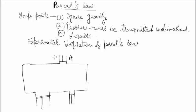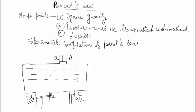अब होता क्या है: जब piston B, जिसका area of cross section 2A है, उसे अपनी position पर रखने के लिए हमें force 2F लगानी पड़ती है — twice of the force applied on piston A. And similarly, on piston C, हमें F by 2 force लगानी पड़ेगी.